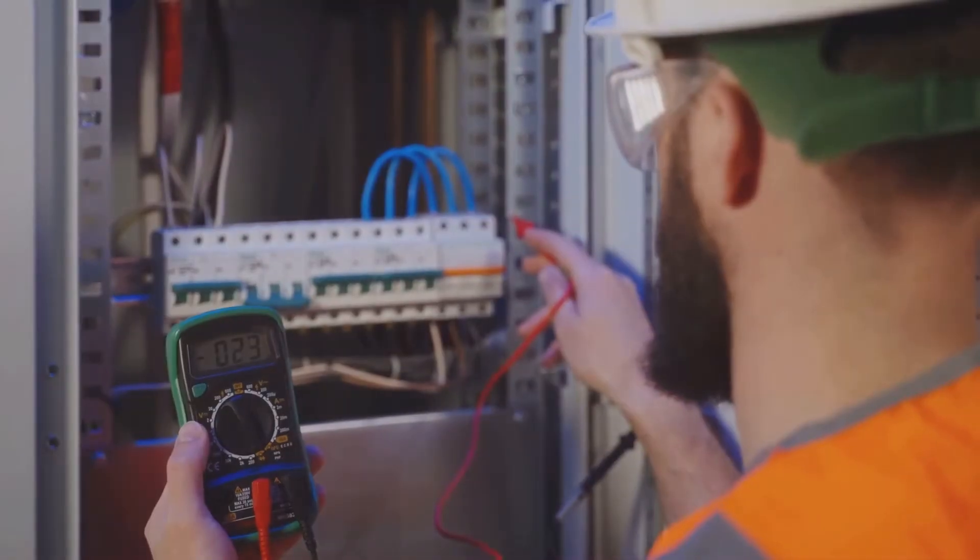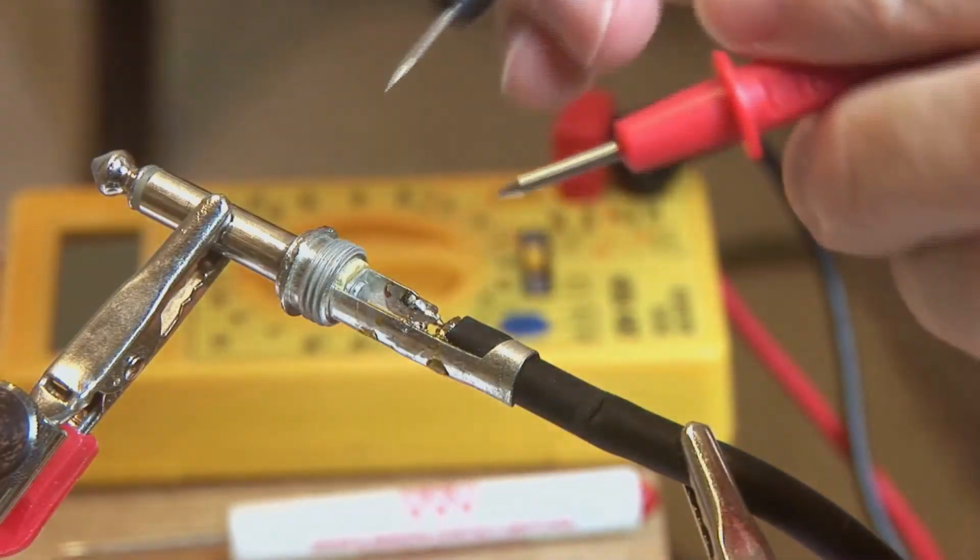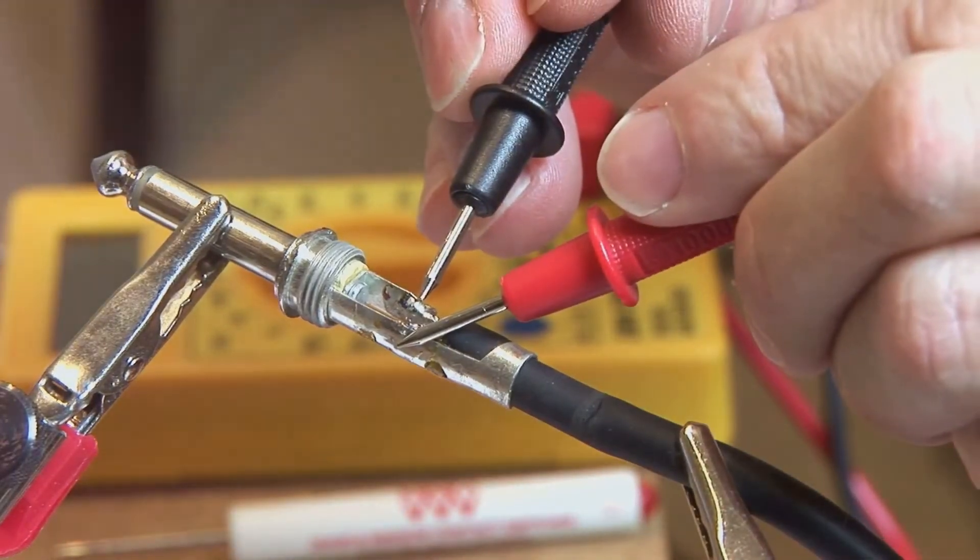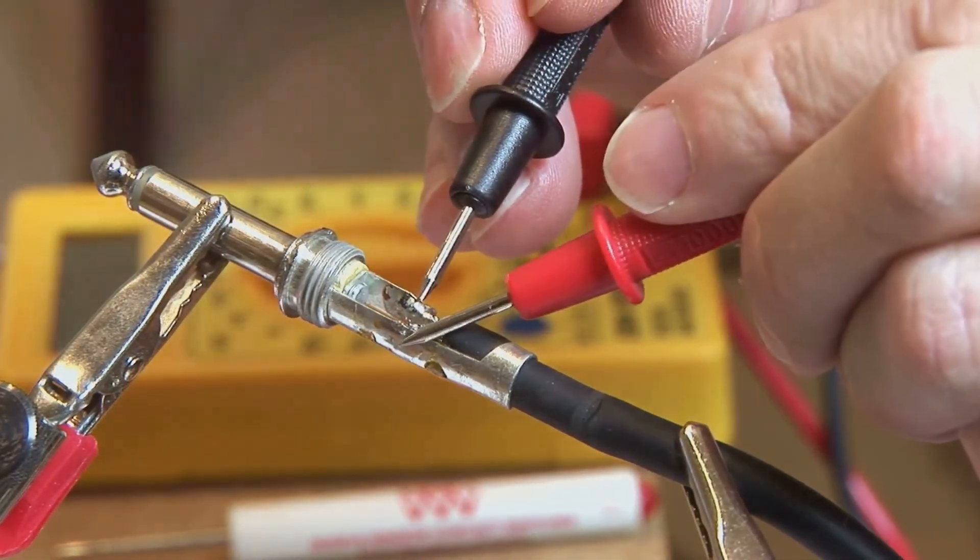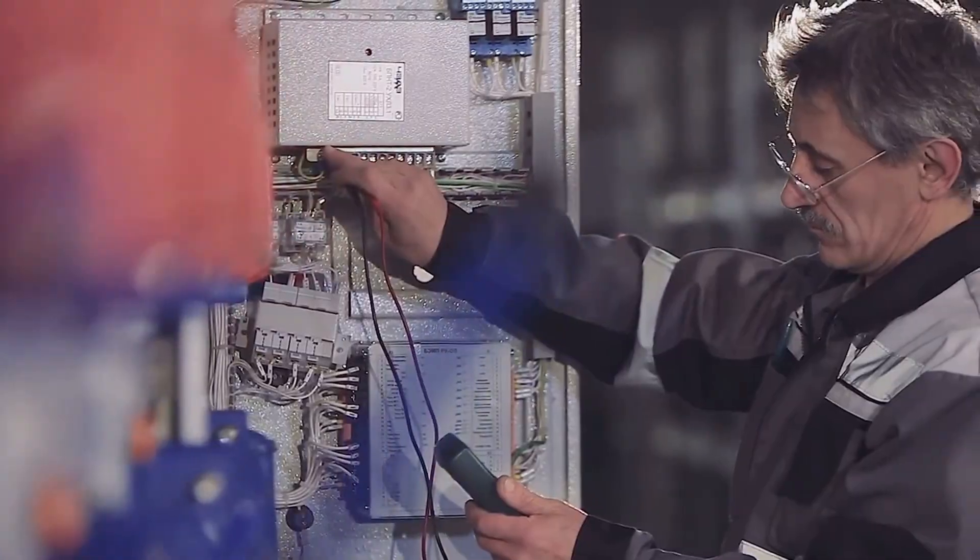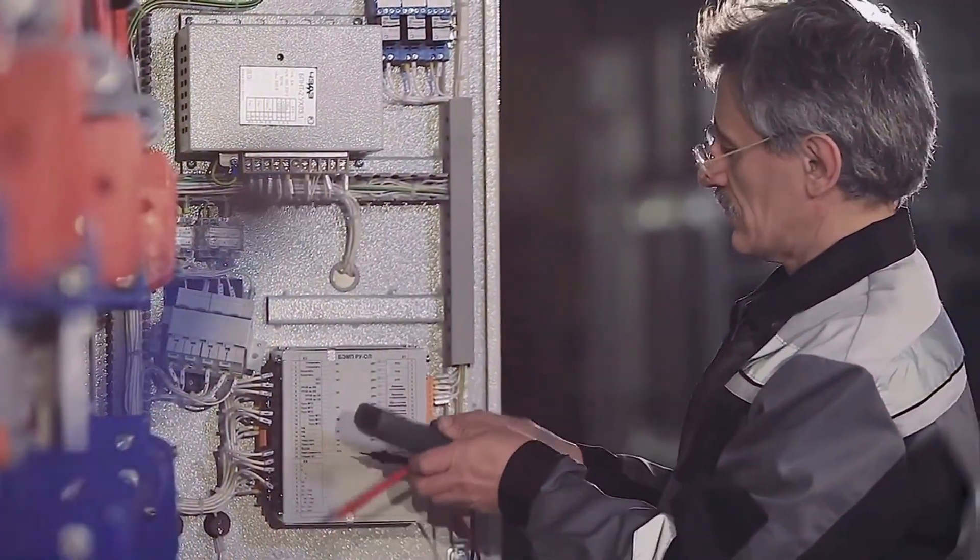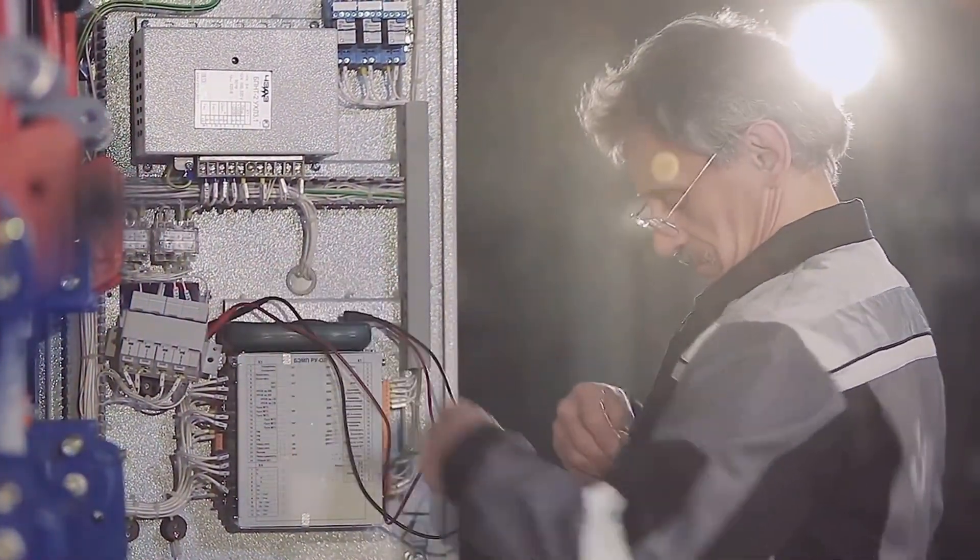You got this! See, checking a solenoid coil with a multimeter isn't rocket science. With a little practice, you'll be a pro at diagnosing solenoid problems in no time. Just remember to stay safe, double-check your connections, and don't be afraid to get your hands a little dirty. Happy fixing!